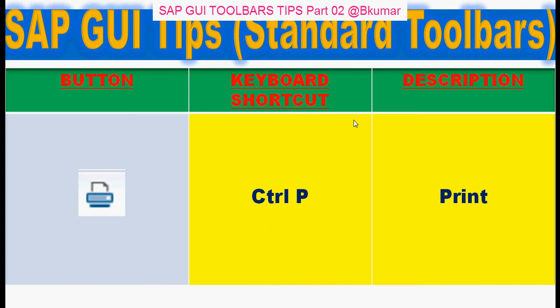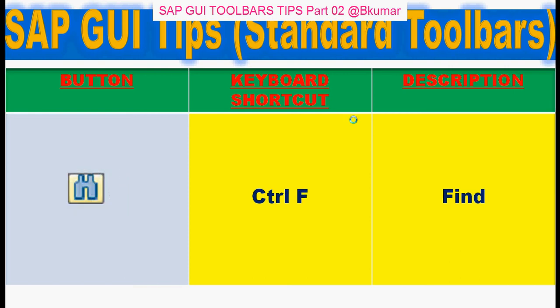To print a document, you can use Ctrl+P on your keyboard. To find a document or find anything, you can use Ctrl+F on your keyboard.